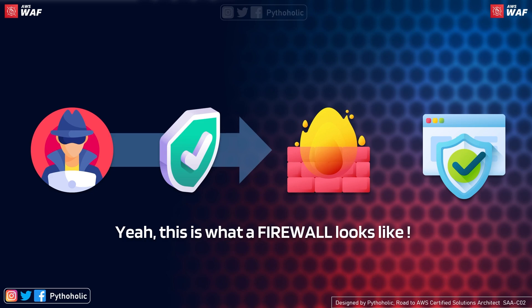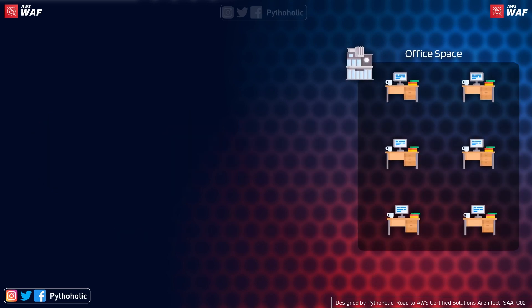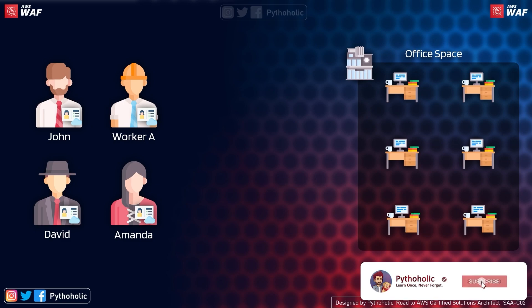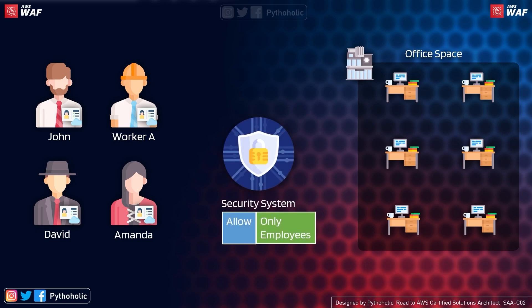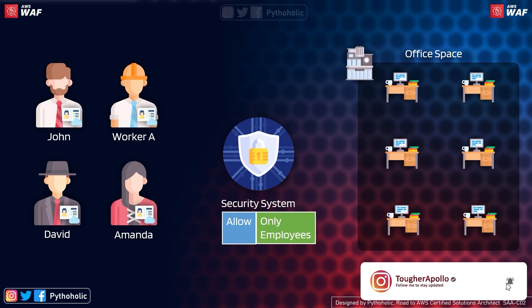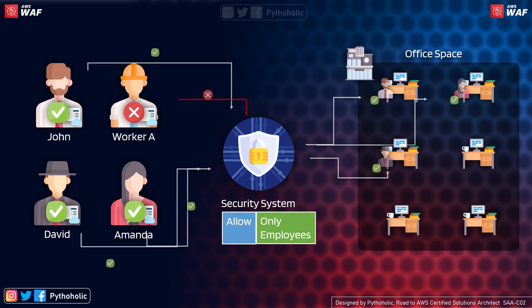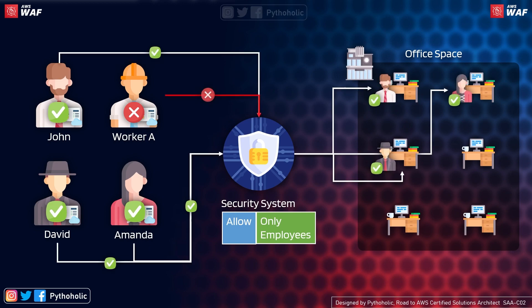What exactly is a firewall? Let's imagine a real-world scenario. Here is your office space. There are four members: John, David, and Amanda are employees of the office, and Worker A is here to fix the plumbing in the cafeteria. Who should have access to the development business unit? Obviously, the three employees — John, David, and Amanda.